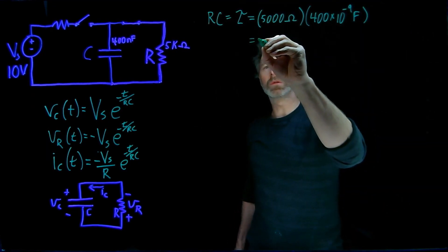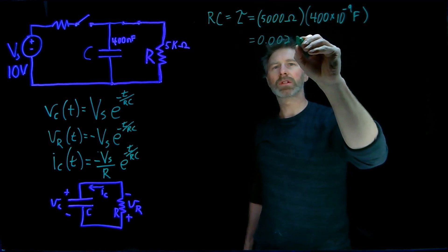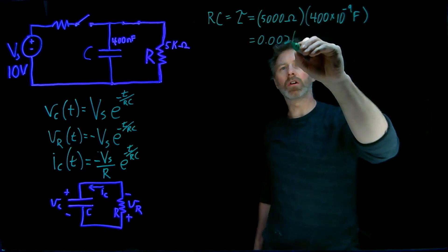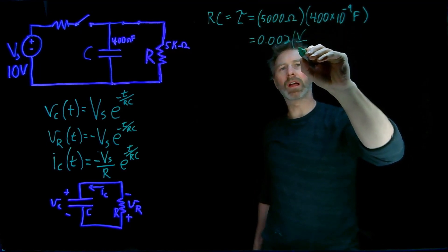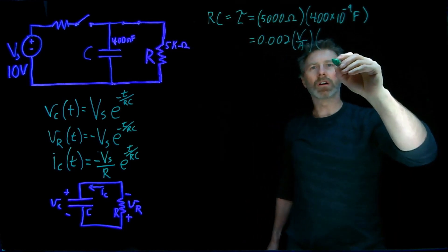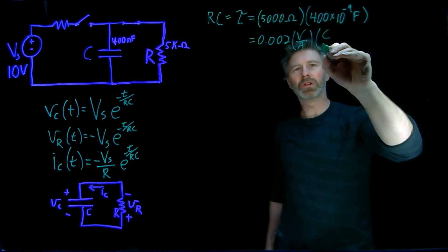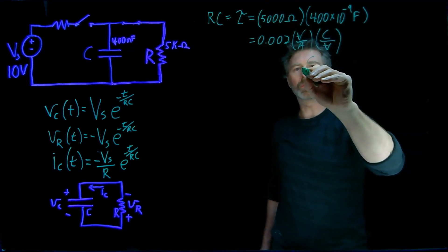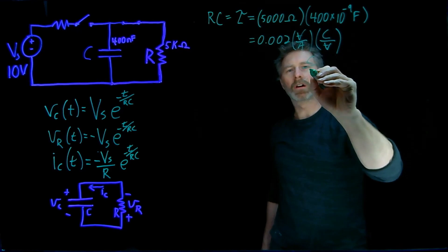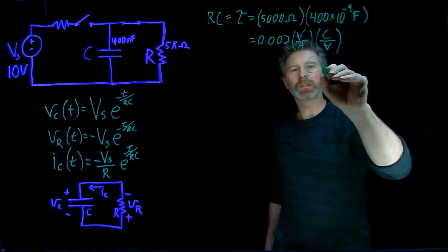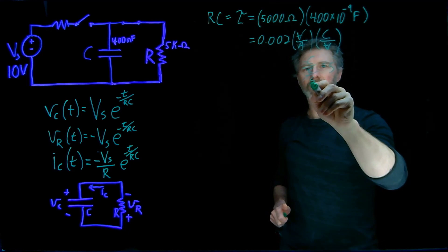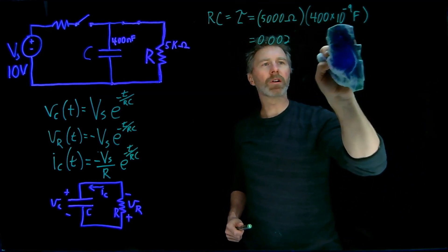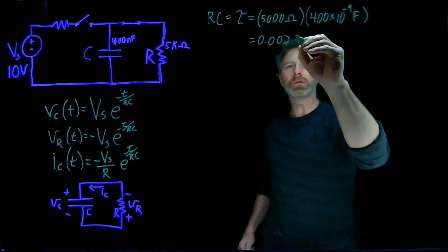This works out to 0.002 seconds. The reason the unit is seconds: ohms are volts per amp, and farads are coulombs per volt. The volts cancel, leaving coulombs per amp. Since amps are coulombs per second, the coulombs cancel and we're left with seconds. So that RC, or time constant, tau, is 0.002 seconds.